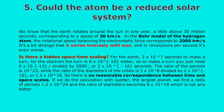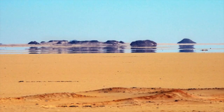So there is no reasonable correspondence between time and space scales. If we do the calculation with Jupiter, the largest planet, we find the ratio of periods 1.2 × 10²⁴ and the ratio of diameters becomes 8 × 10¹⁸, which is not any better. The solar system and an atom, even in the classical model, only very superficially resemble each other. We can conclude that similarity between the infinitely small and the infinitely large is just a mirage.